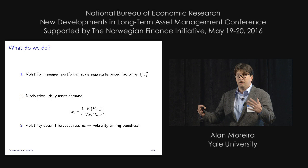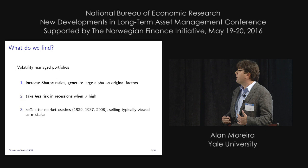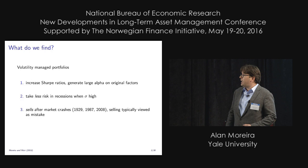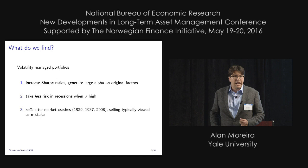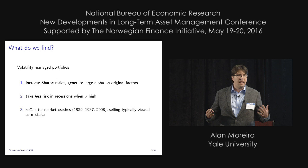You can enhance sharply the Sharpe ratios relative to a buy-and-hold portfolio. In particular, you're going to generate large alphas relative to the original factors. What's puzzling is that you're typically going to take less risk in periods that are kind of scary — you're going to have high alpha by taking less risk in recessions when volatility is high. You're going to sell after market crashes, when typically you think premiums are very high and it's probably a bad idea to be selling.